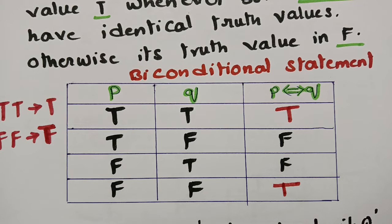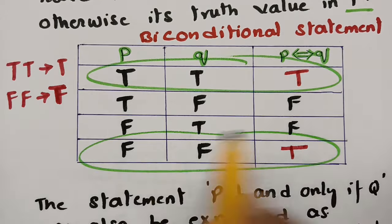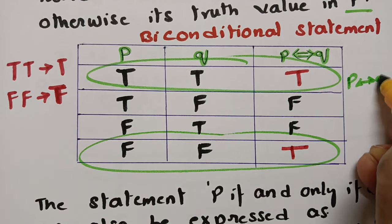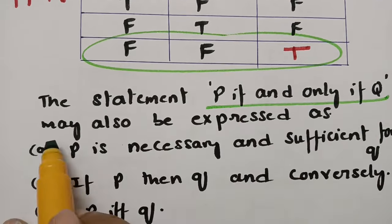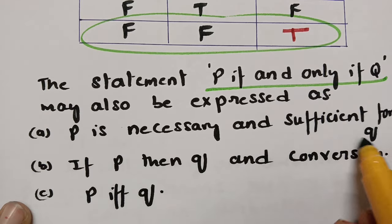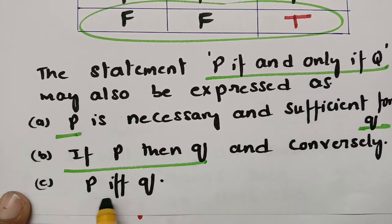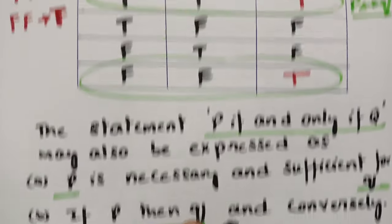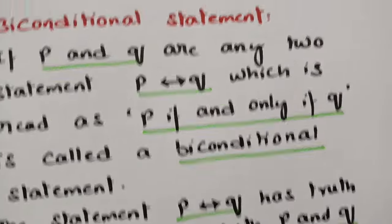Remember: true and true gives true, false and false gives true for P ⟺ Q. The statement 'P if and only if Q' may also be expressed as 'P is necessary and sufficient for Q.' Also, 'if P then Q and conversely' can be written as 'P if Q.' These are all five statements: negation, conjunction, disjunction, conditional, and biconditional.